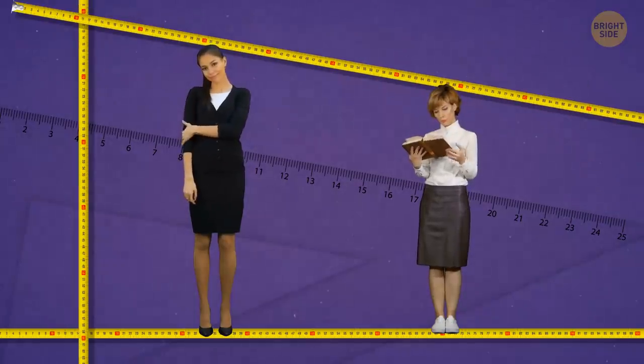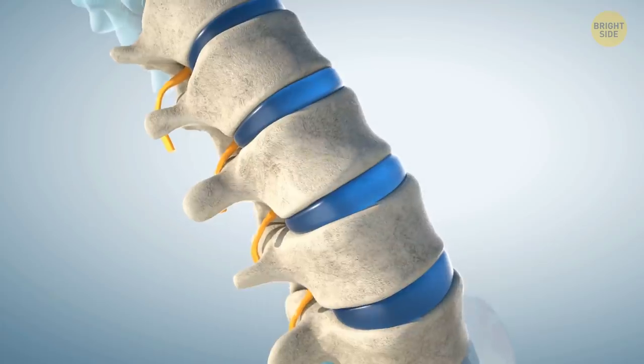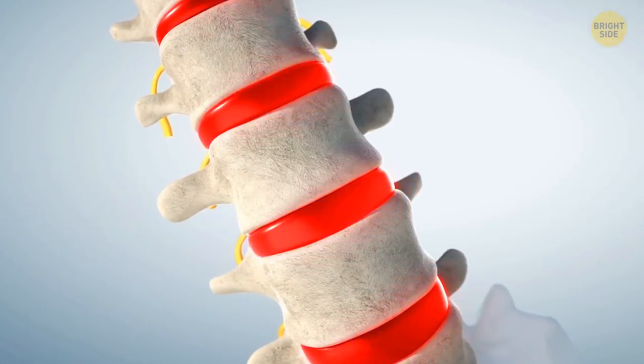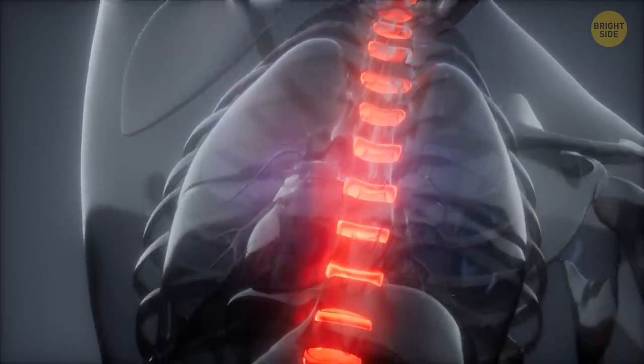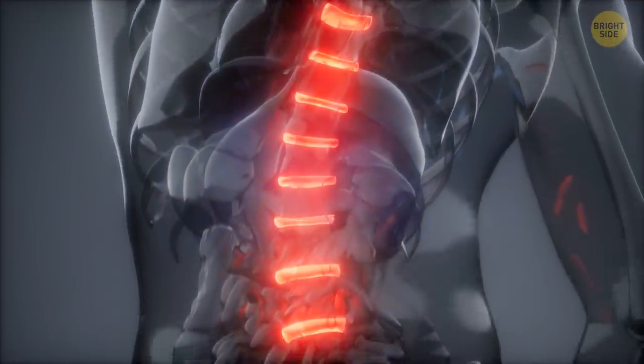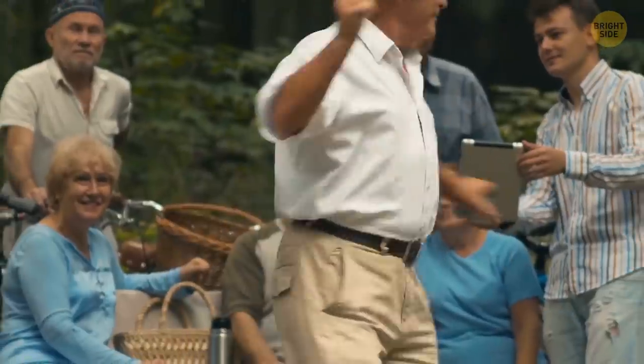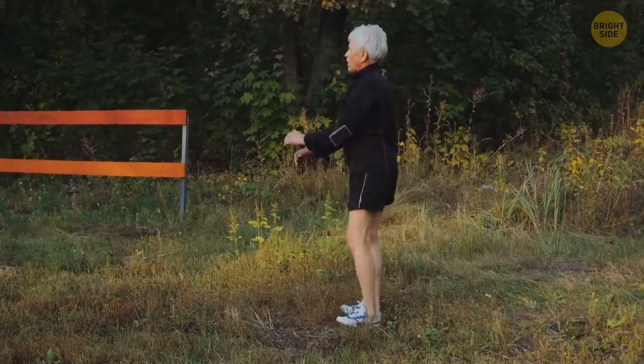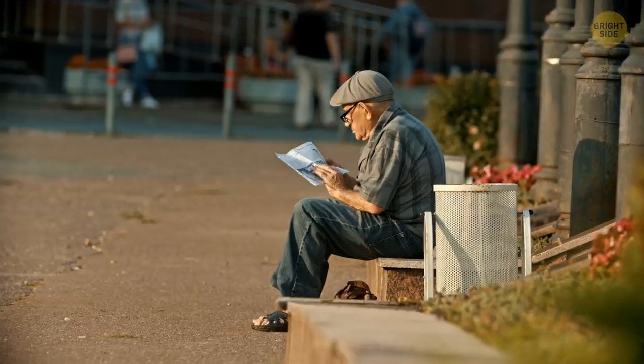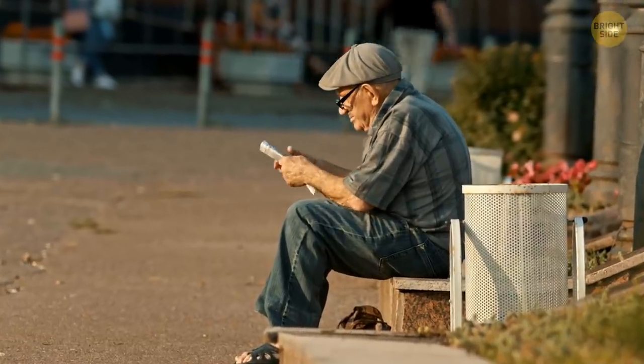Humans start shrinking at the age of 40. Our spine has discs filled with fluid, and they're between bones called vertebrae. As we're getting older, these discs start to lose their fluid, which makes them flatten. That way, the distance between the vertebrae gets smaller, which decreases our height. As we age, our muscles get weaker, which gives us a stooped posture, making us look shorter.